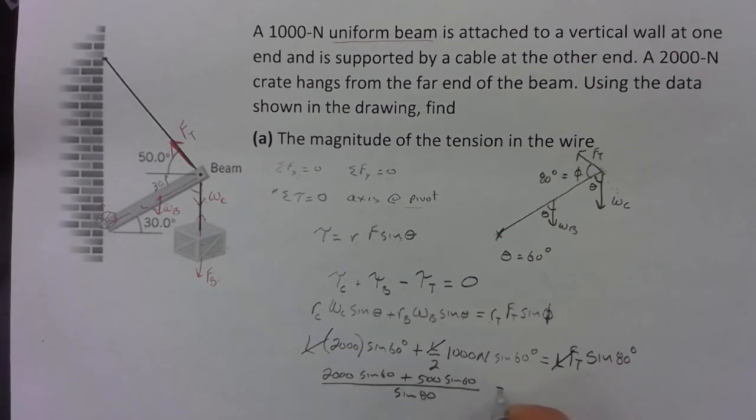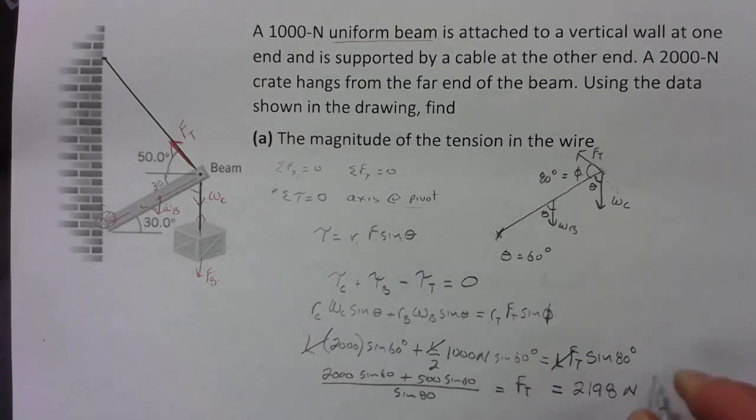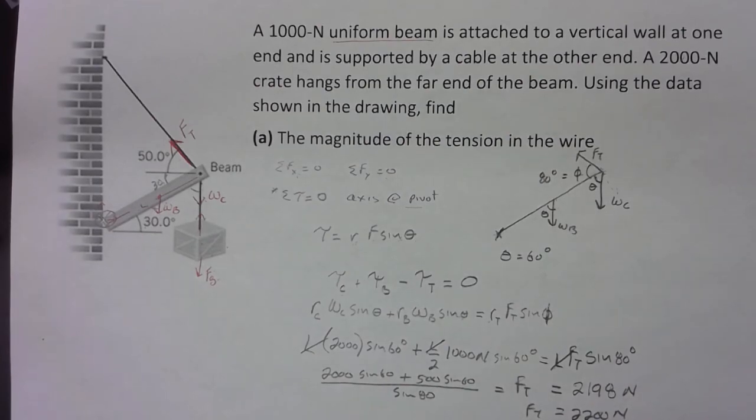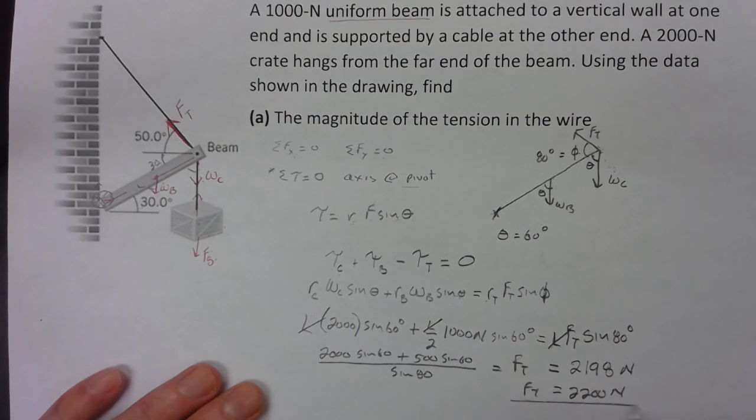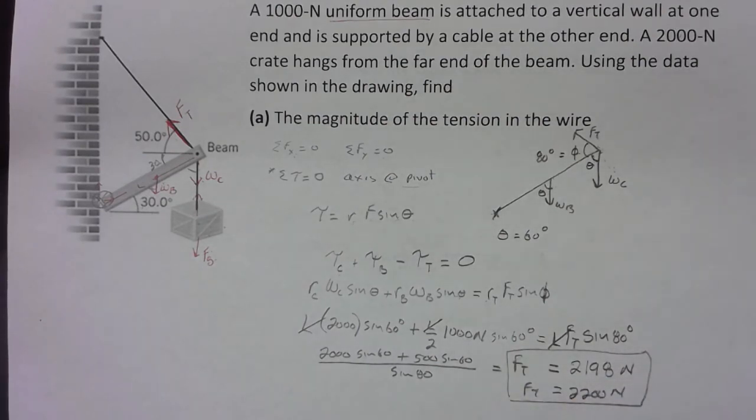So let's plug in all those numbers and check out the answer. I get 2,198 newtons. Now this is all one significant digit, these are three technically, so I'm just going to make it two for now. The tension is right there at the bottom of the screen. All right, 2,198 newtons or 2,200 newtons is that tension. So there you go, I hope that's helpful.